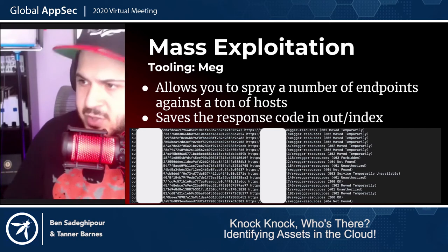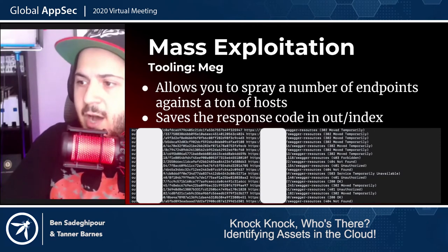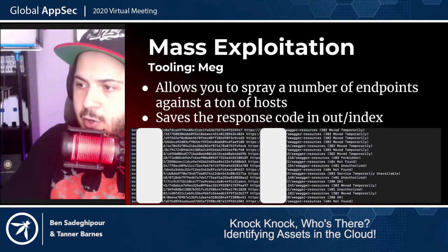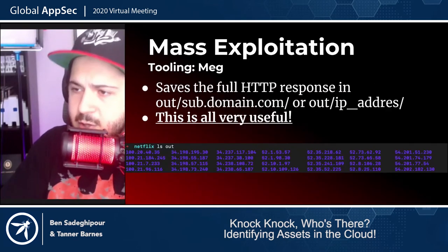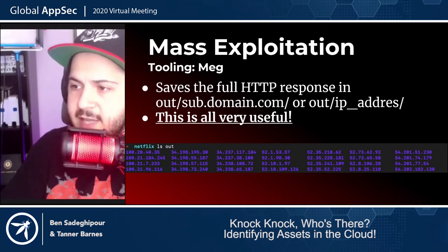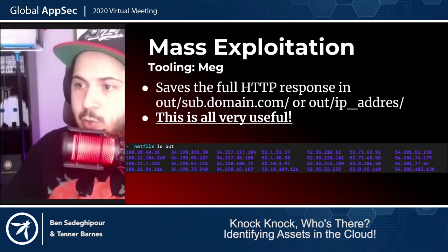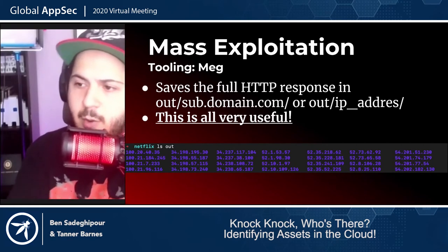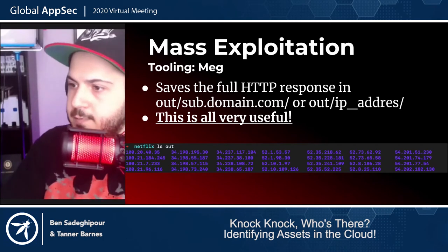The way Meg works: it allows you to probe a number of endpoints against a number of hosts. It saves a response code in a file called 'index' within a folder called 'out'. If you run cat out/index, it tells you where it's stored and what the response was — 302, 200, whatever. It also saves the entire full HTTP response in another folder within out, organized by subdomain or IP address. So you can actually read it afterwards to verify it's not a false positive.